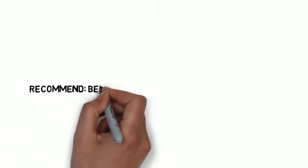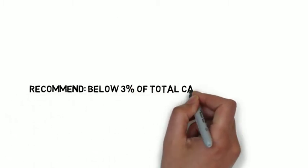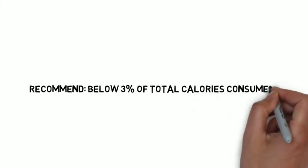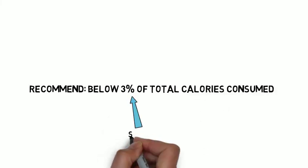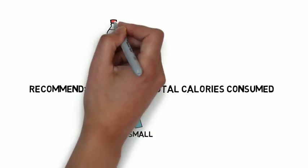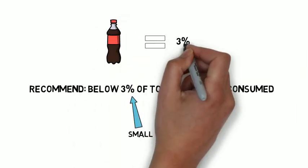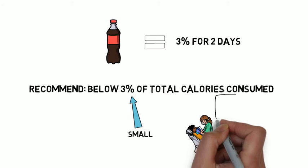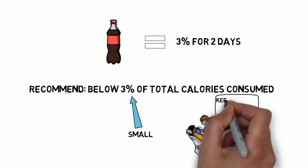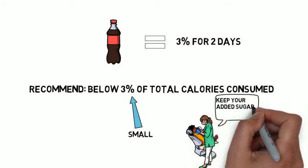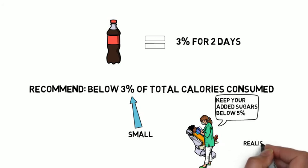This is why the researchers now recommend restricting added sugar intake to below 3% of total calories consumed. And realistically, this 3% is a really small amount. Just one can of soda has enough sugar to satisfy this 3% for two days. This is why dentists recommend keeping added sugar below 5% of all calories consumed instead of 3% because it's more realistic.